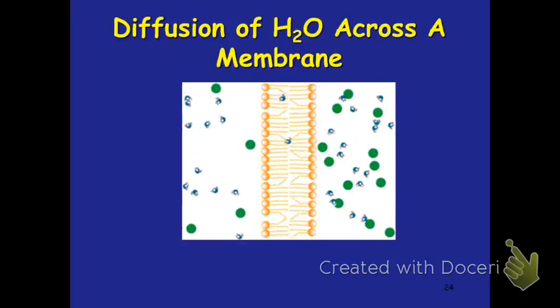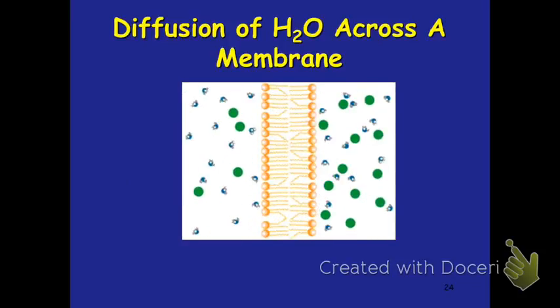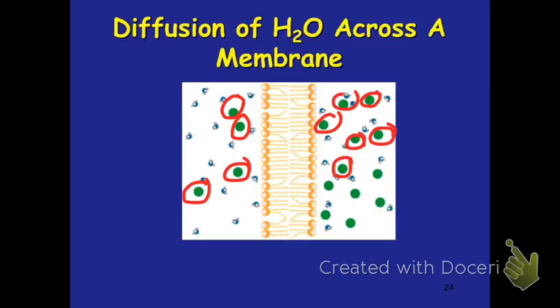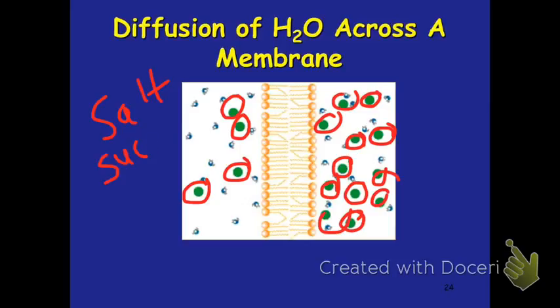You can see the water moving across, going from an area where there's more water to where there is less water. Another way to remember this is that if there is more water, that means there's less solute. These green dots represent the solutes — like our salt. If there's more salt, we have to have more water because salt sucks the water.